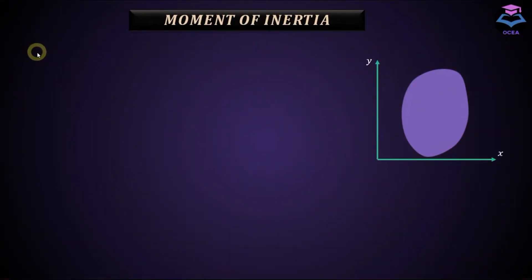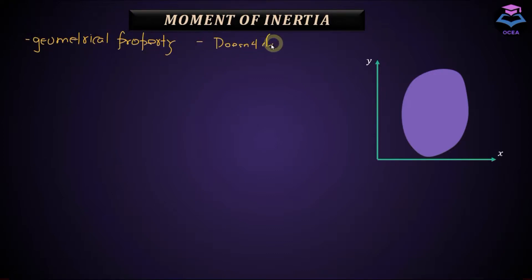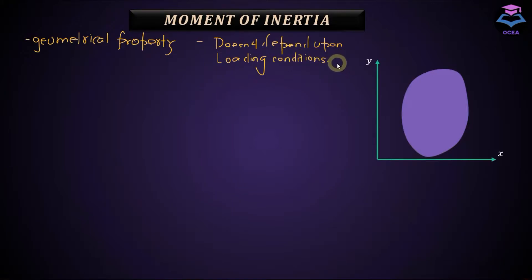Moment of inertia is purely a geometrical property. It does not depend upon loading conditions or support conditions. It is a cross-sectional property depending upon the geometry of the cross-section. Furthermore, moment of inertia is sometimes also called the second moment of area.